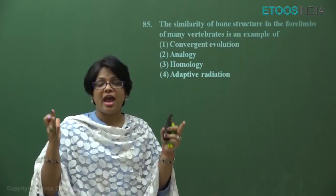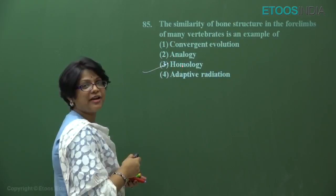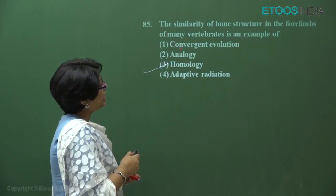Organs which have the same origin but different functions are called homologous organs. So this is an example of homology. Analogous organs, on the other hand, are organs which have different origin but the same function due to sharing of habitat. Analogy is an example of convergent evolution.